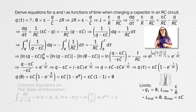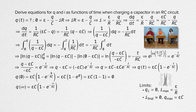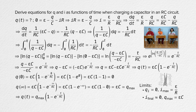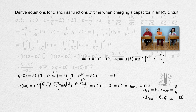What about the charge when time equals infinity? If we plug infinity in for time, we get e to the negative infinity, which equals zero. So this equation shows that the charge on the capacitor after a very long time equals EMF times capacitance, which equals the maximum charge. We can substitute charge maximum into the equation for charge as a function of time.